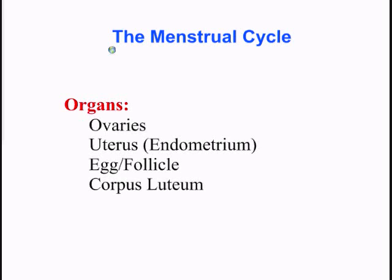First of all, we have the ovaries — two ovaries in the reproductive system of the woman — and then we have the uterus. What we're really interested in is a buildup of the uterine wall, and that's called the endometrium. That's the layer where the egg is actually going to implant itself if it gets fertilized. So from now on, let's refer to the uterus as the endometrium.